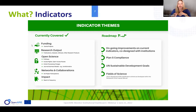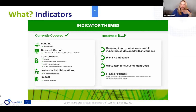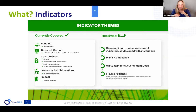We also cover networks and collaborations, and impact — where we have indicators on reach and frequency related to downloads from different resources. The roadmap for indicators to be completed by early fall 2022 includes improvements suggested by users, a set of indicators on Plan S compliance, indicators that include UN Sustainable Development Goals — research output by goals — and indicators that include different fields of science down to FOS Level 3.